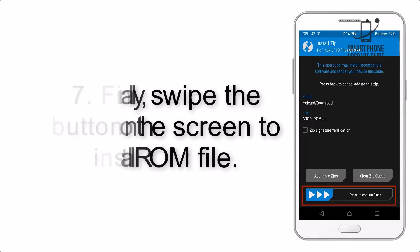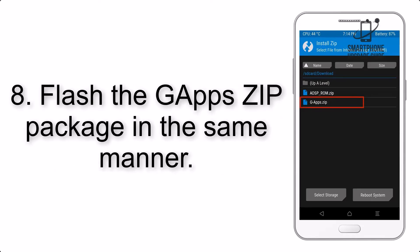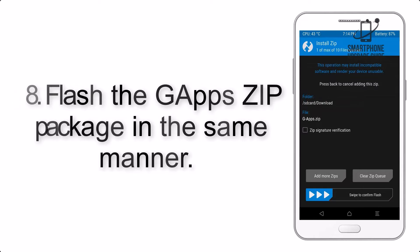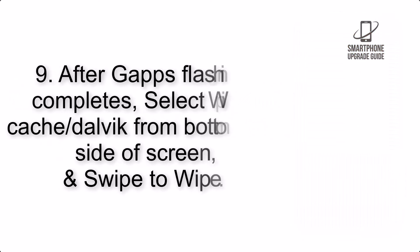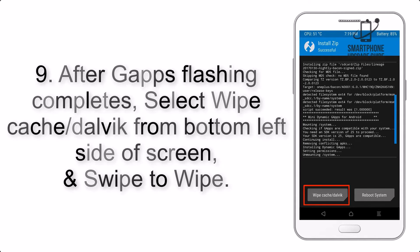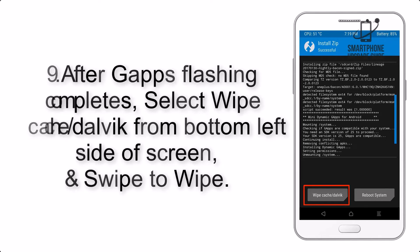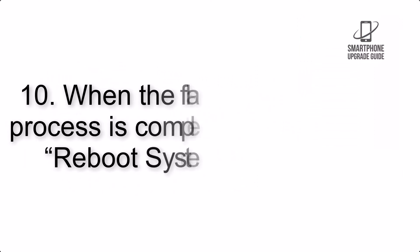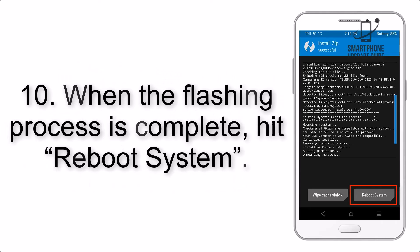Step 7: Swipe the button on the screen to install the ROM file. Step 8: Flash the GApps zip package in the same manner. Step 9: After GApps flashing completes, select Wipe Cache and Dalvik from the bottom left side of the screen and swipe to wipe.